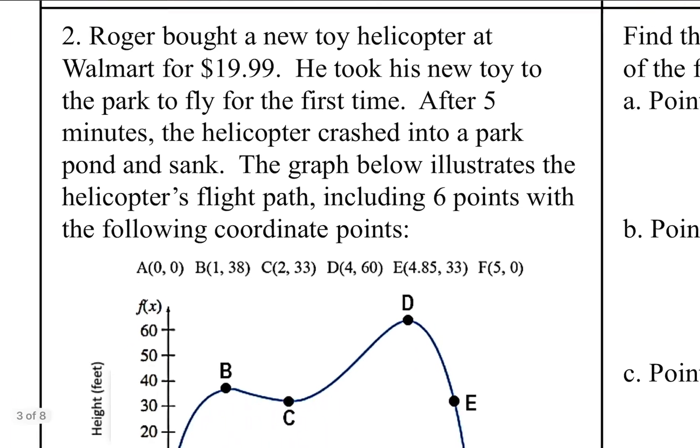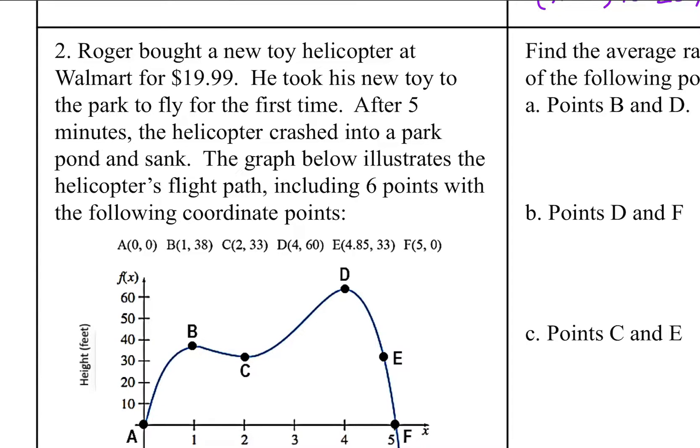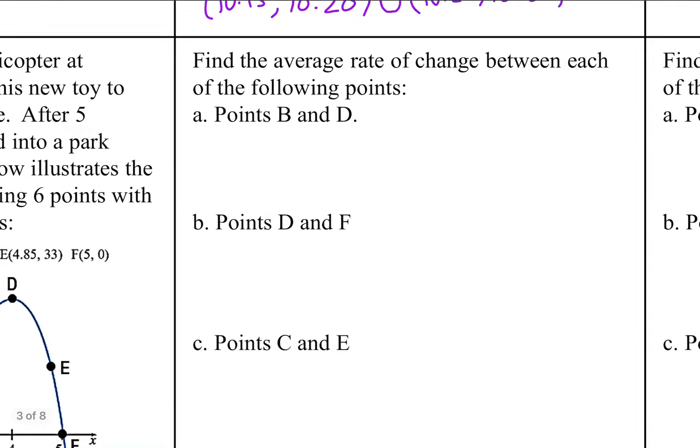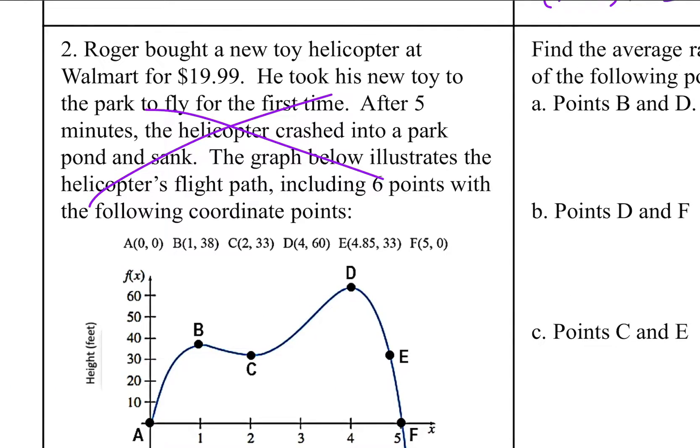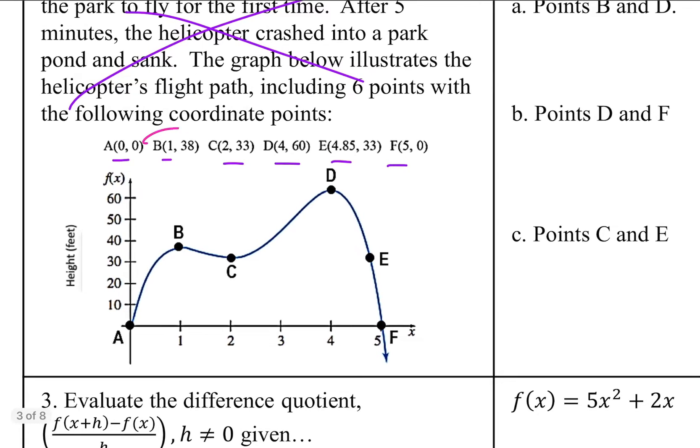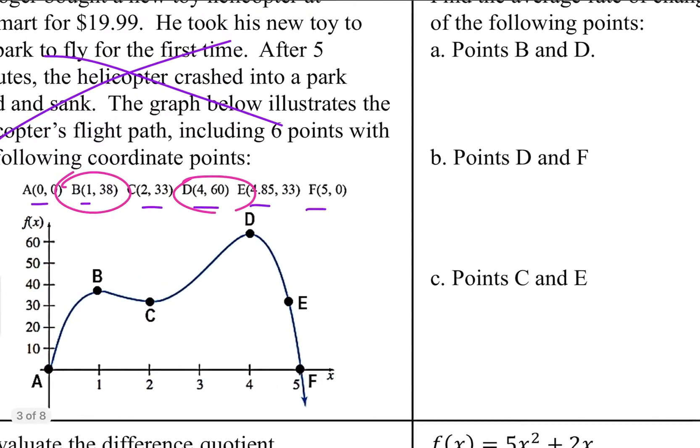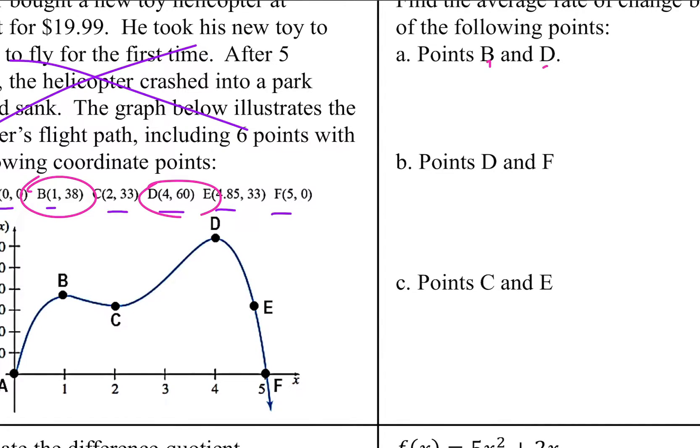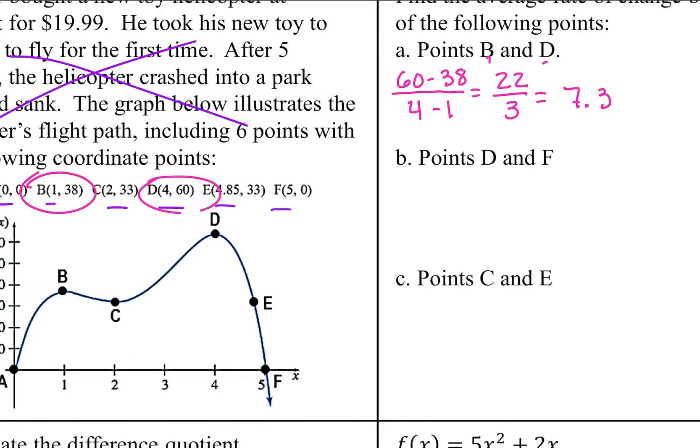Number two says Roger bought a new toy helicopter. Actually, honestly, there's a lot of blah, blah, blah here. But if you read the question, it just says find the average rate of change between each of the following points. So you don't even need to read all this. All we really care about is the fact that we've got these six points right here and we want to find the average rate of change between them. So my first one was B and D. So I want to find the average rate of change between B and D. We've got y2 minus y1. So 60 minus 38 divided by x2 minus x1. So I've got 4 minus 1. That gives me 22 over 3. 22 divided by 3 gives us 7.3 repeating. So I'm just going to put 7.33.